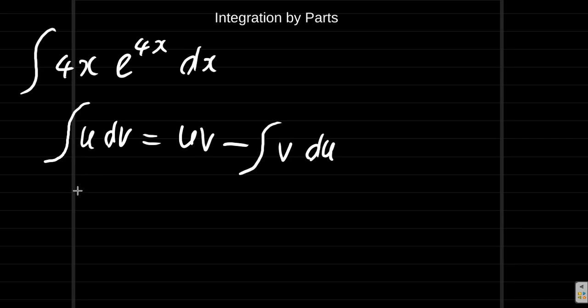So we want integral of 4x e to the 4x where u is 4x and dv is e to the 4x.